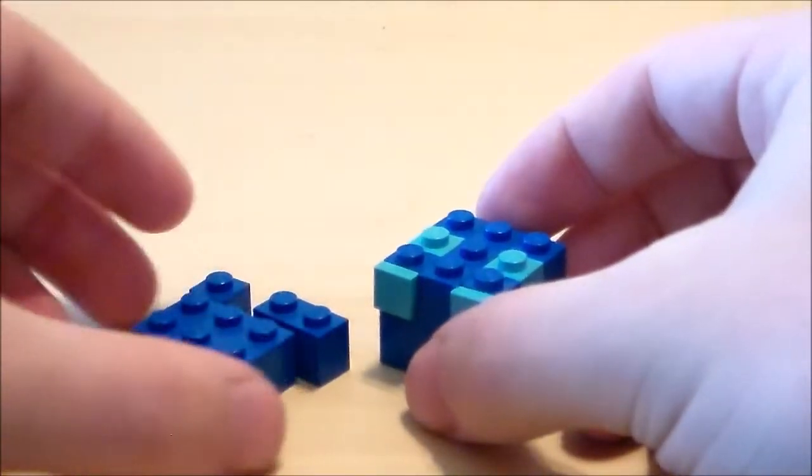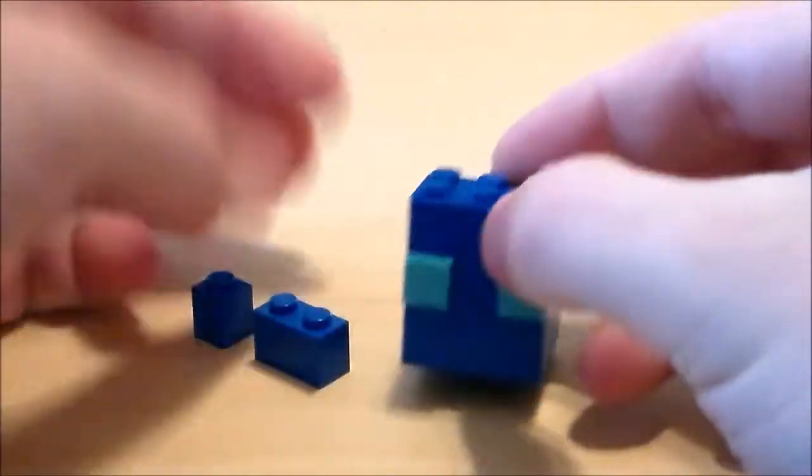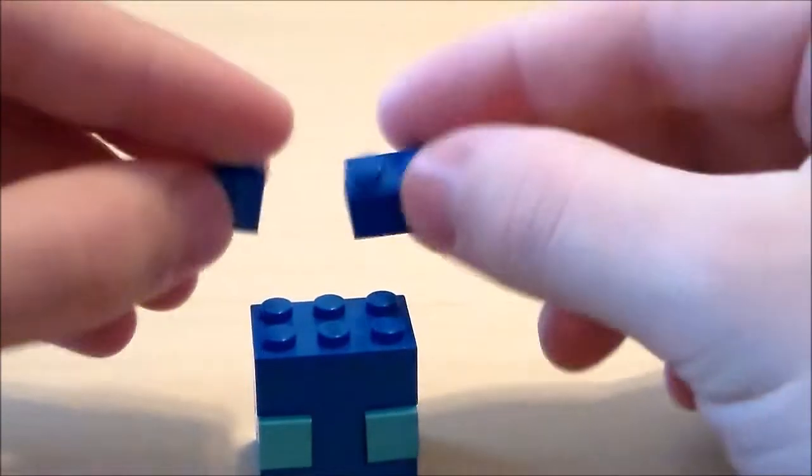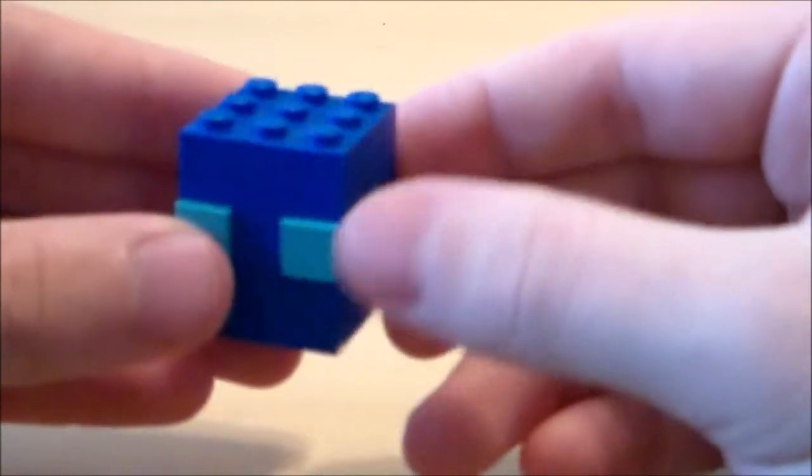And then to finish off the glow squid, I'm going to get another 2x3 brick, put that on the top, and then just finish off with a couple blue bricks on the top. And there you go, there's the body for the glow squid.